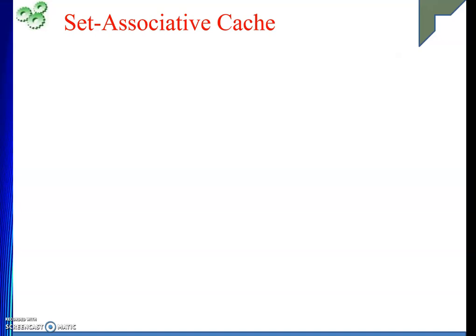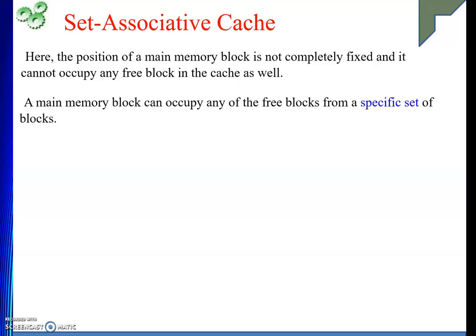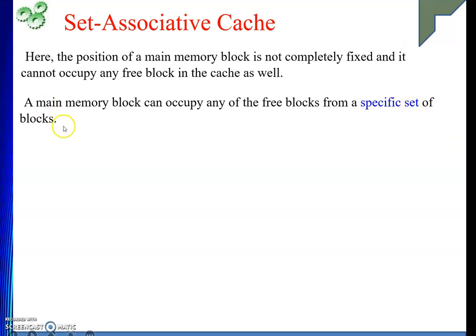The next method is set associative cache. Here, the position of a main memory block is not completely fixed and it cannot occupy any free block in the cache as well. That means the problems associated with the previous two methods are both nullified. My position is also not fixed and even I cannot occupy any of the free blocks. I will do something in between — a main memory block can occupy any of the free blocks from a specific set of blocks.